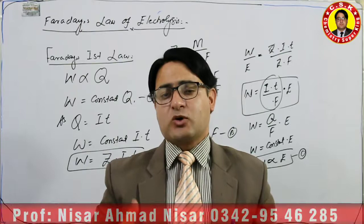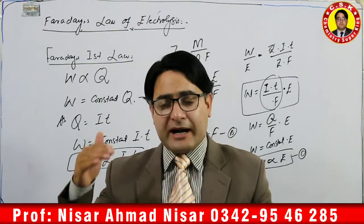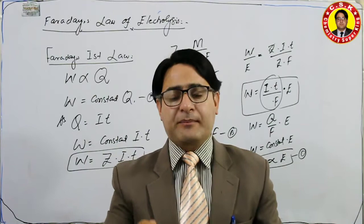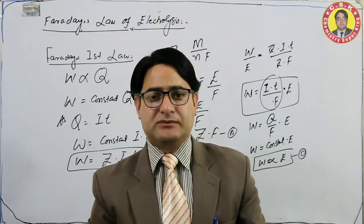Faraday named these relationships: the first is called Faraday's First Law of Electrolysis, and the second is called Faraday's Second Law of Electrolysis. Before going to Faraday's First Law, remember: whenever we perform electrolysis or make an electrochemical cell, substance is liberated at the anode and substance is deposited at the cathode.